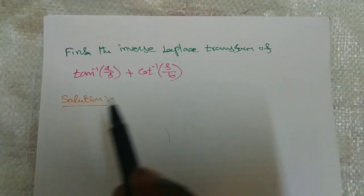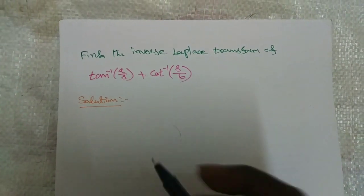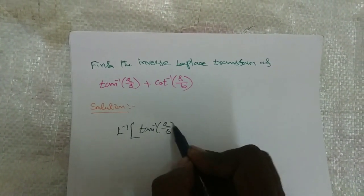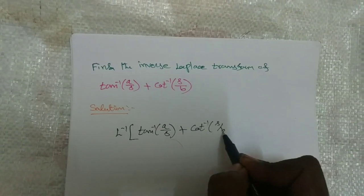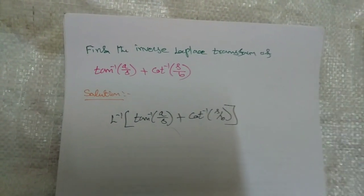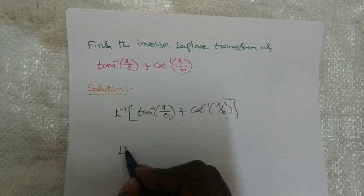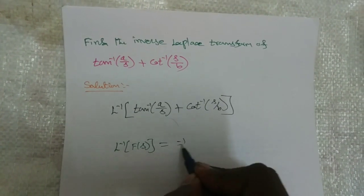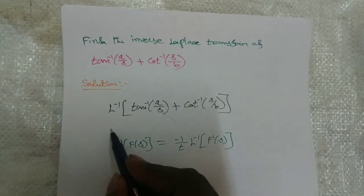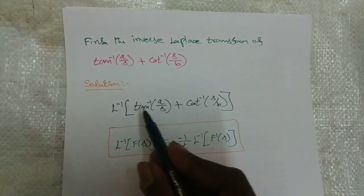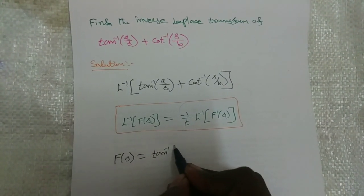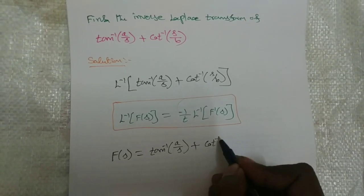Find the inverse Laplace transform of tan⁻¹(a/s) + cot⁻¹(s/b). We want to find L inverse of tan⁻¹(a/s) + cot⁻¹(s/b). This is also a special function, so we use the same property: L inverse of F(s) = minus 1/t into L inverse of F'(s). Taking the inner term as capital F(s), so F(s) = tan⁻¹(a/s) + cot⁻¹(s/b).